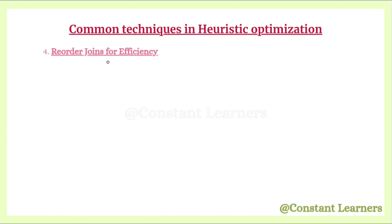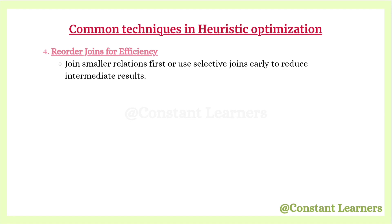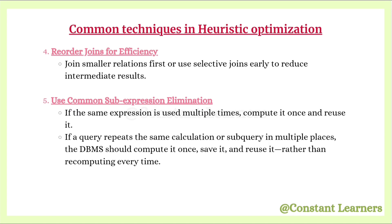Next is to reorder joins for efficiency — join smaller relations first, or use selective joins early to reduce intermediate results. Another technique is common sub-expression elimination: if the same expression is used multiple times, compute it once and reuse it. For example, if two friends both ask you the price of an ice cream, you check once and tell both rather than going back to the shop twice.